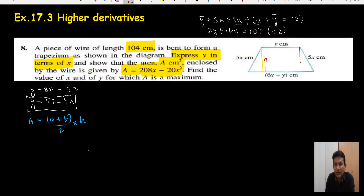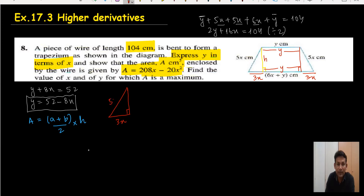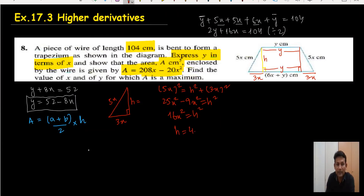We make two right triangles. The top side is y, and the bottom is 6x plus y, so the extra base is 6x, which splits into 3x on each side. Using Pythagoras on the right triangle with hypotenuse 5x and base 3x: 5x squared equals h squared plus 3x squared, so 25x² minus 9x² equals h², giving h equals 4x.